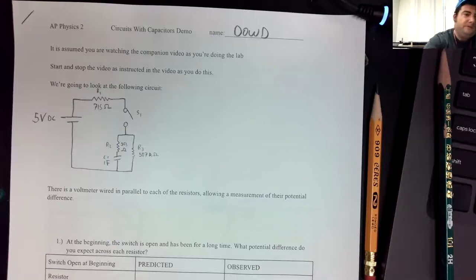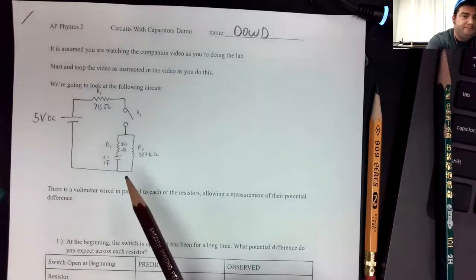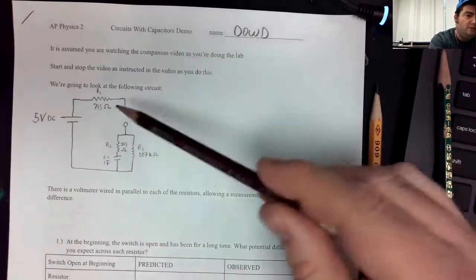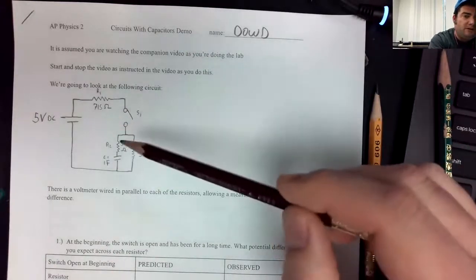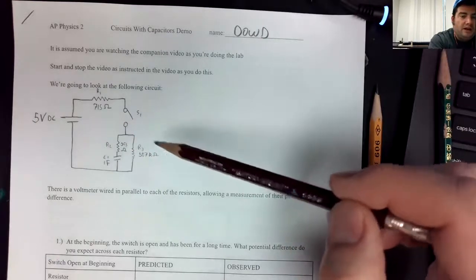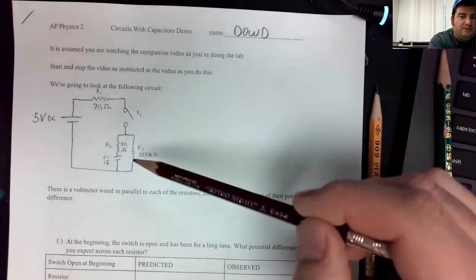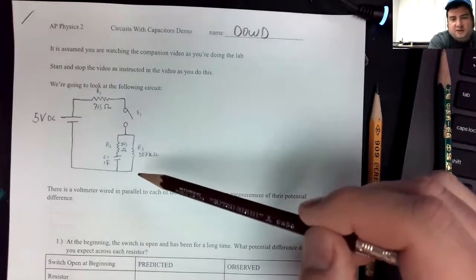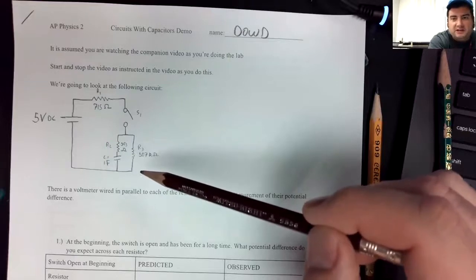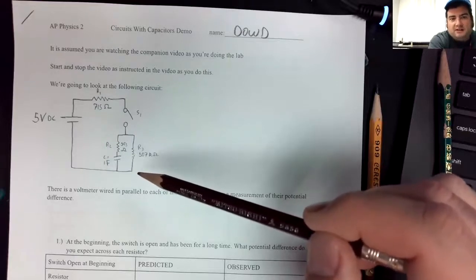So what we're going to do is examine this circuit. I have three resistors in here. Two of them are relatively small, and one of them is huge. The one that's huge is in parallel with the capacitor. We're going to see that that's what's called a bleeder resistor, and it has a very specific purpose in a circuit containing capacitors. We'll get to that later.